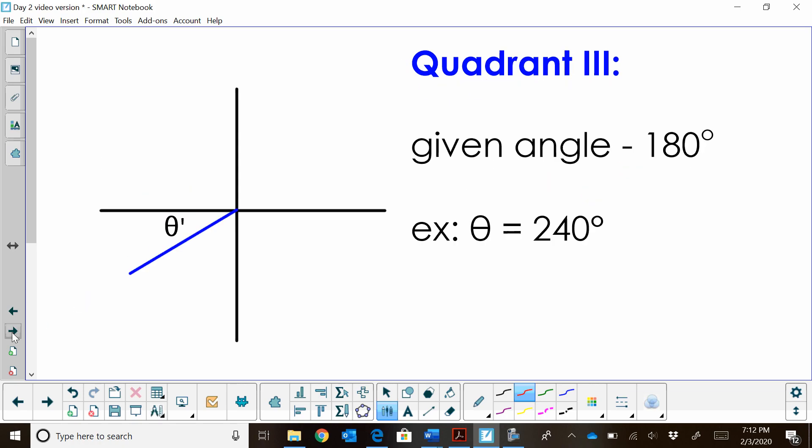Let's look at quadrant 3. Quadrant 3, starting on the positive x-axis, we're going to rotate to quadrant 3. Now, this is going to be found by how far it is from the x-axis. Well, we've passed the x-axis. So we're going to take that given angle, which is greater than 180, and we're going to subtract 180 from it to find the reference angle. So this one's just going to be 60 degrees. So it's the given angle minus 180.